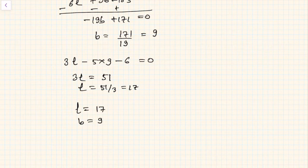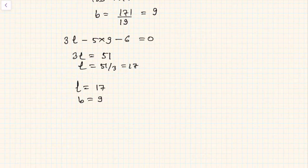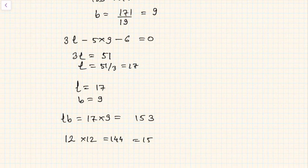Let us check if this is true or not. The area now is LB, which is 17 into 9, which is 153 square units. Now if I reduce the length by 5, it will become 12, and increase the breadth by 3, it becomes 12 into 12, which is 144. This is nothing but 153 minus 9. That's correct. First condition is met.